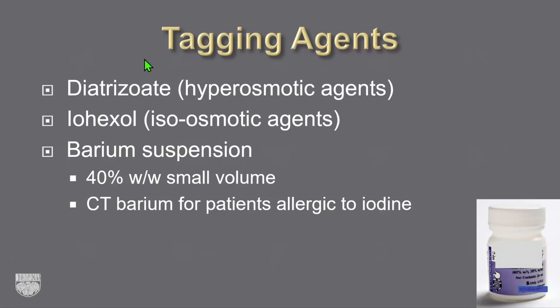A split dose with saline cathartic gives half the day prior and half the morning of the exam. Adding bisacodyl orally the day before helps clean out residual fluid. For tagging agents, you can use hyperosmotic agents such as diatrizoate, iso-osmotic agents such as iohexol, barium agents, or a combination — for example barium with diatrizoate or barium with iohexol. Contrast allergic reactions from oral iodinated agents are extremely rare, but for patients who would need a steroid prep before IV contrast, I use barium instead.